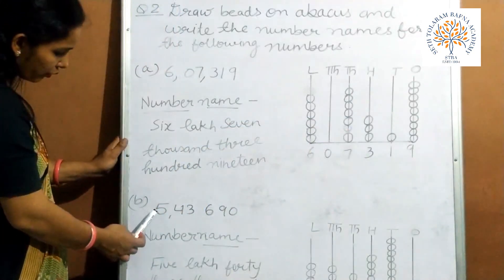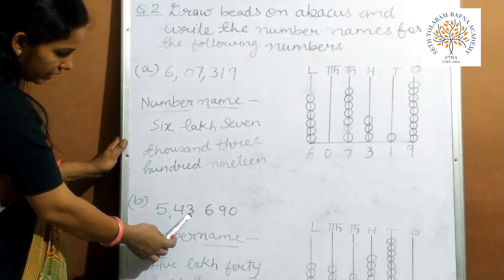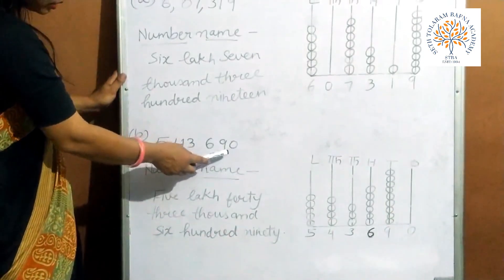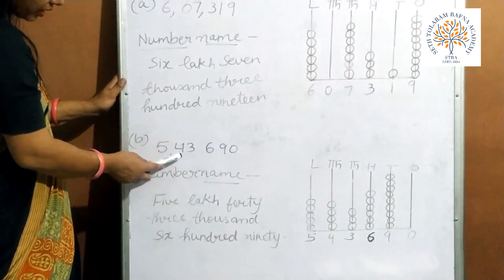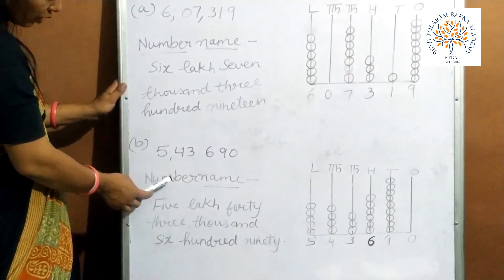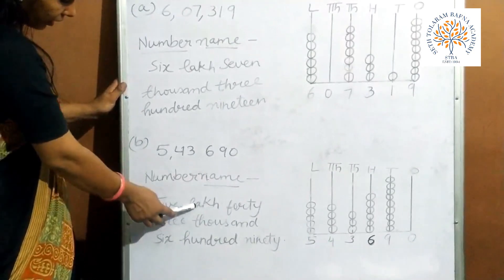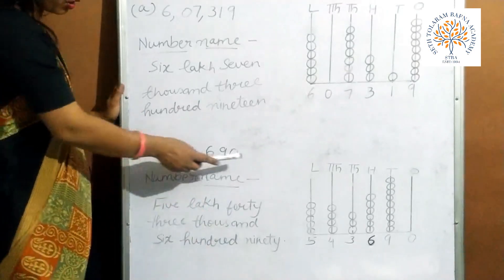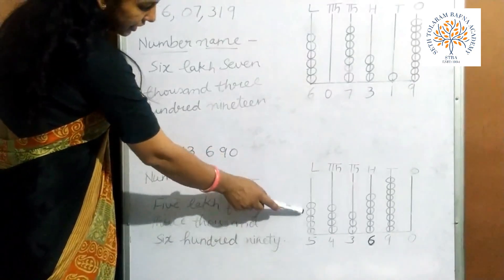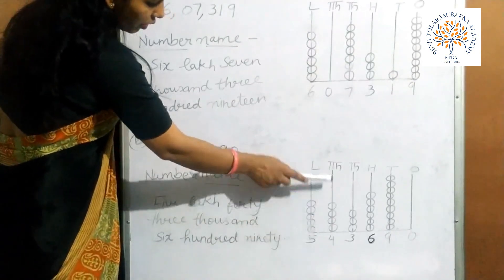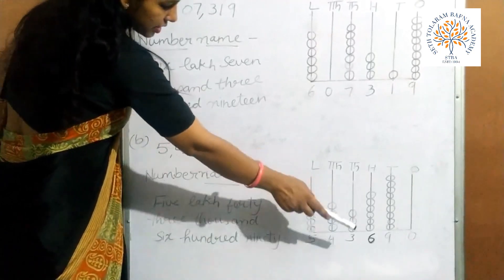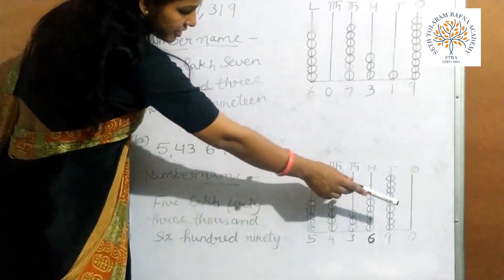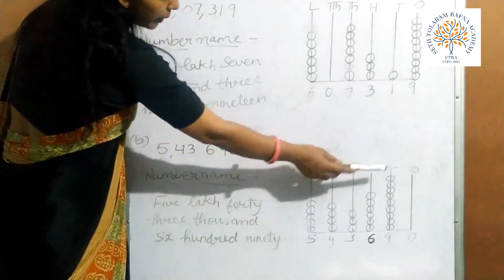Now the second part is 5,43,690. Again according to the Indian place value chart, the number name of this number is 5,43,690. On the abacus, we draw 5 beads on lakh place, 4 beads on 10,000 place, 3 beads on 1000 place, 6 beads on 100 place, 9 beads on 10s place. There is no digit on 1s place, so we will not draw beads there.